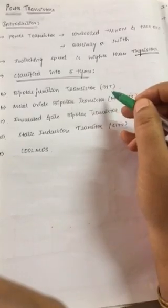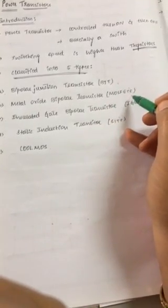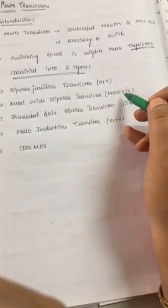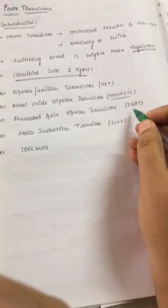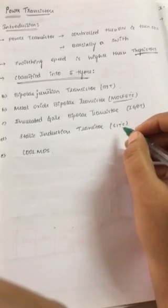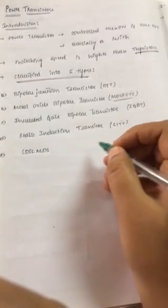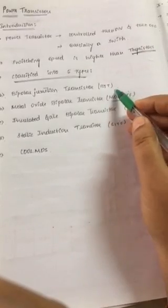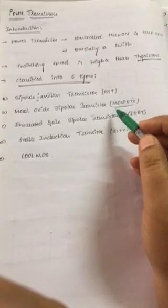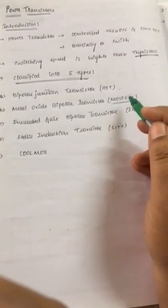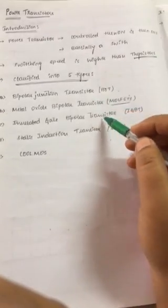Power transistors are classified into five types: first is BJT, which is a Bipolar Junction Transistor; second is MOSFET, the Metal Oxide Semiconductor Field Effect Transistor; third is IGBT, the Insulated Gate Bipolar Transistor; fourth is SIT, the Static Induction Transistor; and fifth is CoolMOS. In this chapter we are going to see the steady-state characteristics and switching characteristics of each of these transistors.